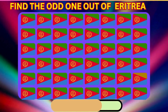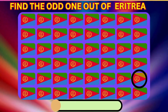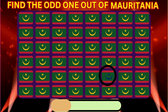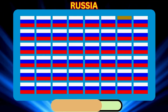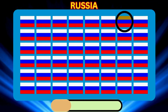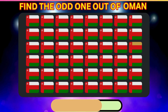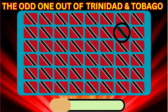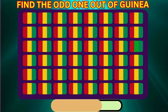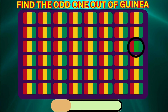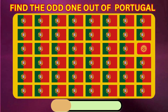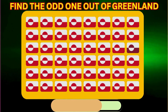Find the Odd One Out of Eritrea. Find the Odd One Out of Mauritania. Find the Odd One Out of Russia. Find the Odd One Out of Oman. Find the Odd One Out of Trinidad and Tobago. Find the Odd One Out of Guinea. Find the Odd One Out of Portugal. Find the Odd One Out of Grenada.